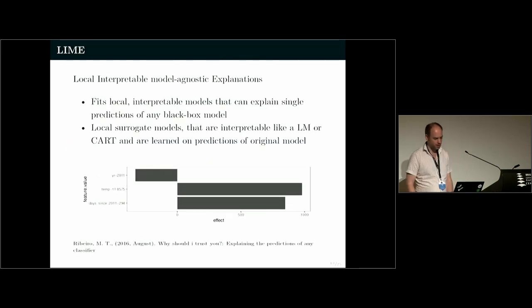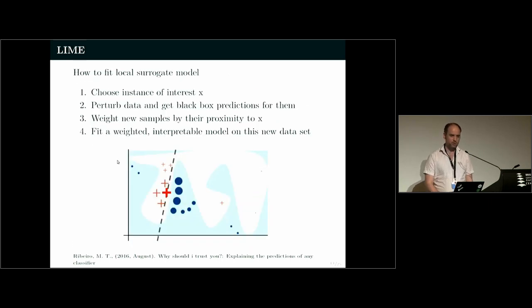Third method, and this is now a local interpretation method to explain individual predictions, is called LIME. So the idea is like this. Assume you have a very non-linear predictor, where it's quite likely that all global explanations are a bit misleading because it's really hard to kind of come up with a simple structure that explains the complete model.